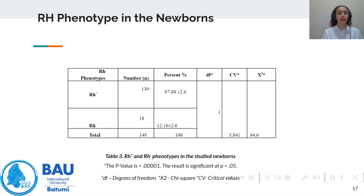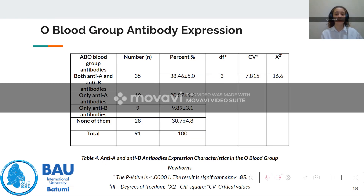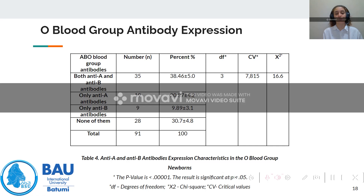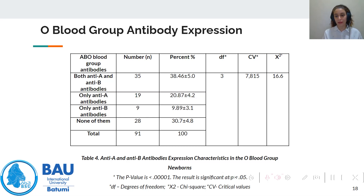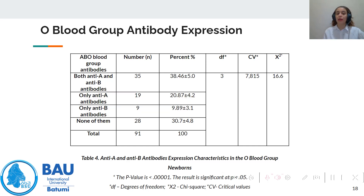Using anti-D anti-sera to study the Rh phenotype of these newborns, we saw that 87% were Rh positive and only 12% were Rh negative. We were also very interested in observing antibody expression in newborns and how it differs from adults. In the O blood group, where we expect to find both anti-A and anti-B antibodies, that was the case in only 38% of samples. Only 20% expressed anti-A antibodies alone, 9.89% expressed only anti-B antibodies, and 30% expressed none of the antibodies.